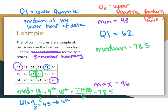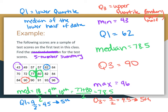Now let's find Q3, the median of the upper half of the data. Again, there are nine values on that side, so nine divided by two is 4.5 — we go to the 5th value on the upper side. Counting one, two, three, four, five, Q3 is equal to 90.